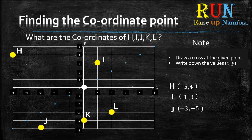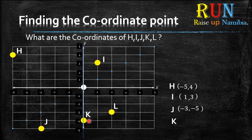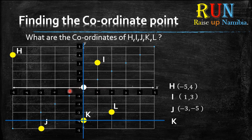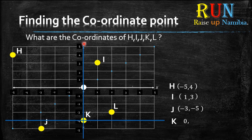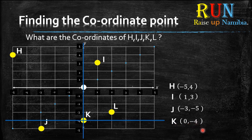Moving on to K — K is over here. We draw our cross. Always start at the x-axis: where does the blue line cross the x-axis? It's in the center between 1 and negative 1, so the value is zero. Write down zero, put a comma. For the y-axis, there's a vertical line — don't get confused, ignore it. Follow the y-axis and find the other crossing blue line, which is at negative 4. Write down negative 4, put it into brackets.